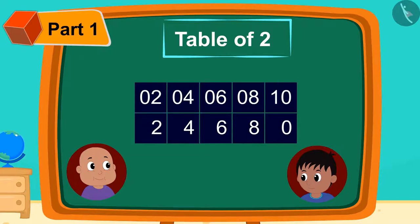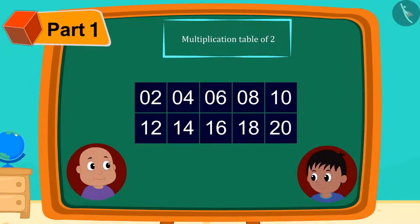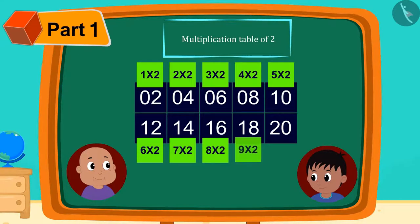Now he wrote 1 next to 2, 4, 6 and 8 in the second line. And finally, he wrote 2 next to 0. Children, did you see any magic? Yes, and that's a table of 2 right here.